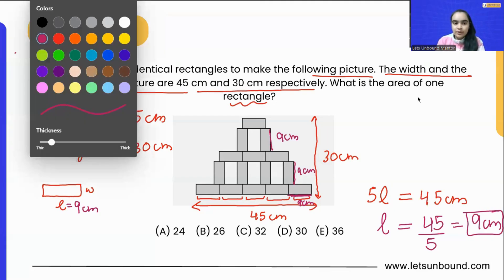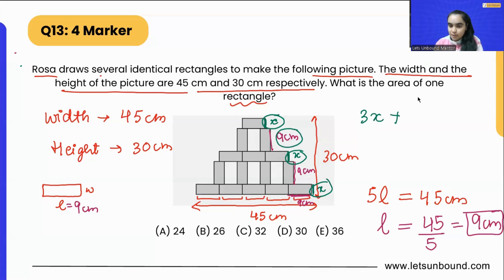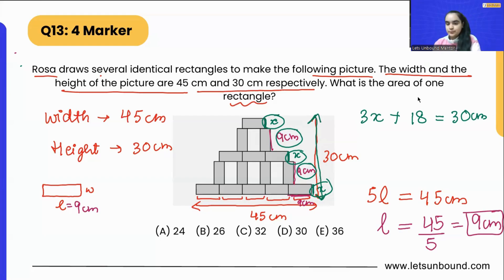Now I need to figure out the width — that is, the shorter side of this rectangle. Let that be x. Looking at the height of the picture, there are three shorter sides of the rectangles plus two longer sides (9 + 9 = 18), and these together make the total height of 30 centimeters. So the equation is: 3x + 18 = 30.